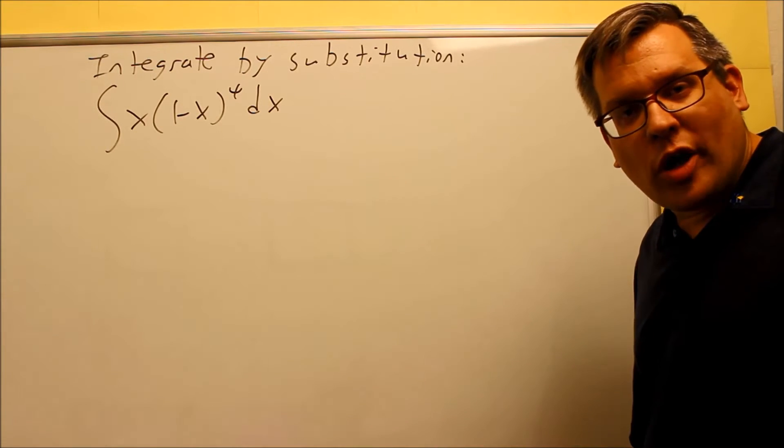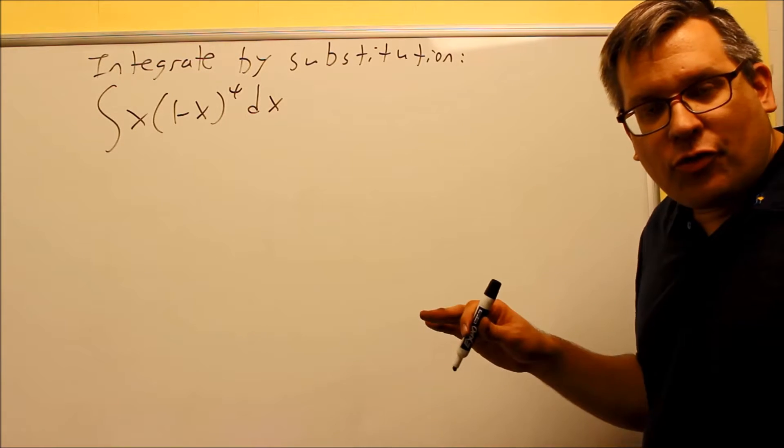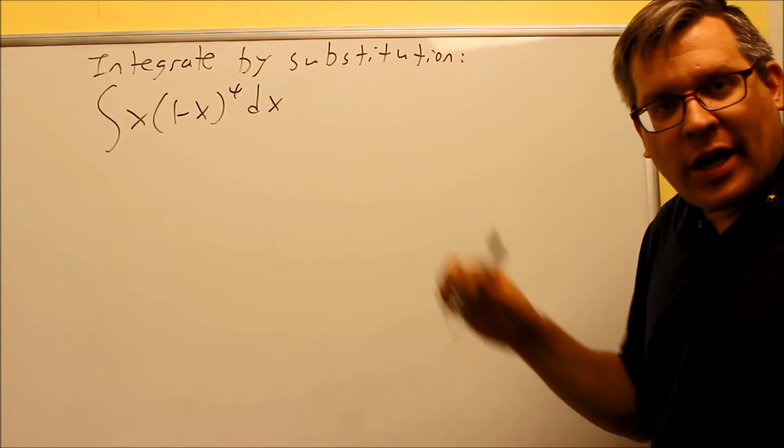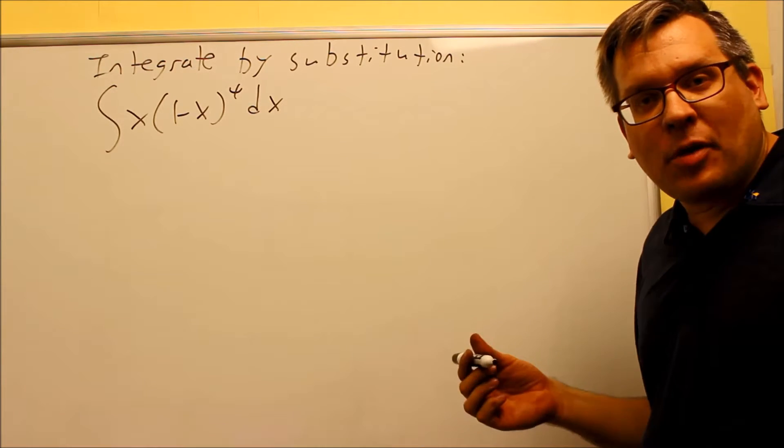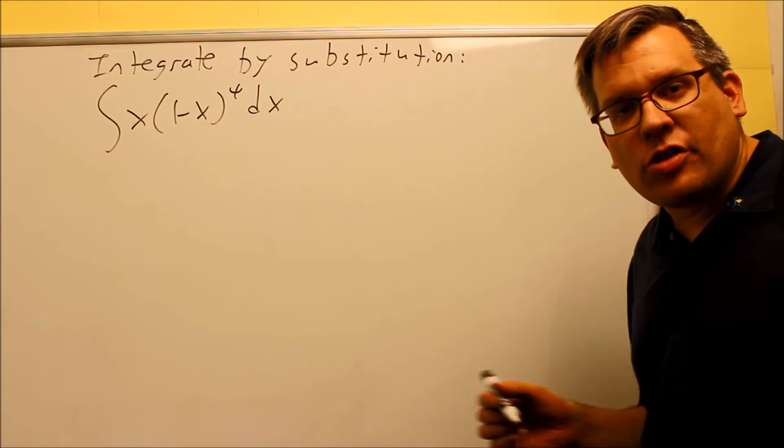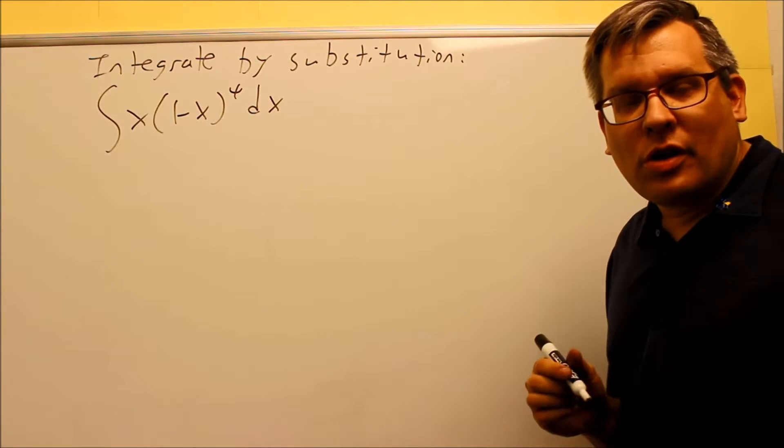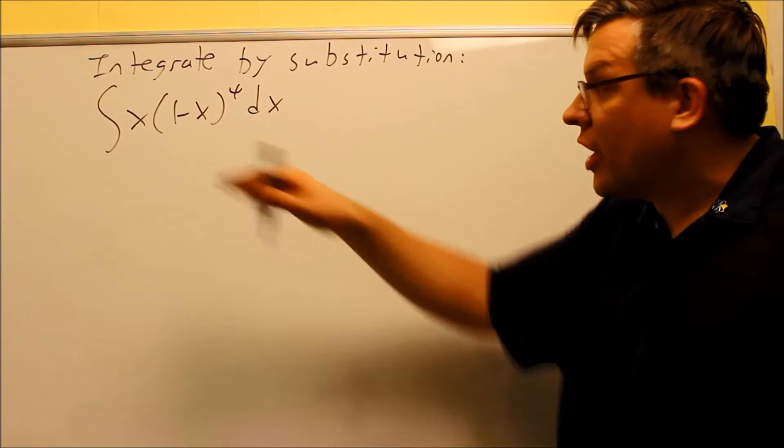For some of these problems, no matter what, when you solve for your U and plug everything back in, sometimes you're not going to be able to get all the X's to cancel out. So there's another strategy that you can use for that, and this is going to be called change of variables. We are going to do that on this problem.